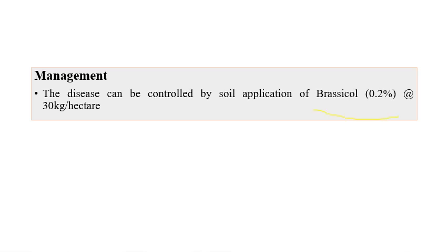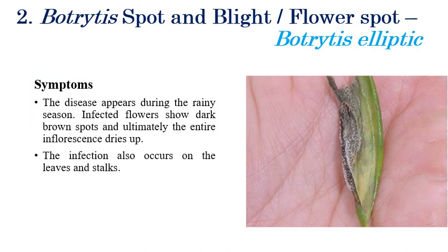Coming to the management of stem rot, application of Brassicol at the rate of 0.2 percent, at 30 kilograms per hectare, can be recommended.